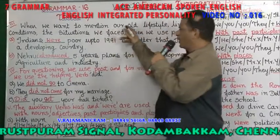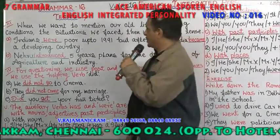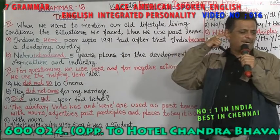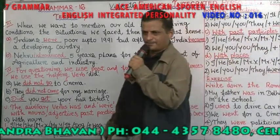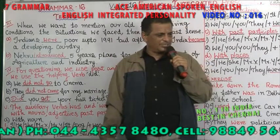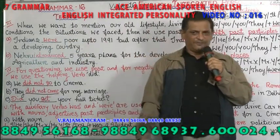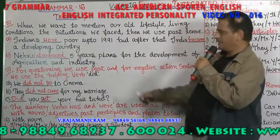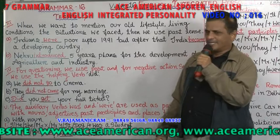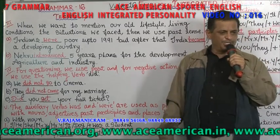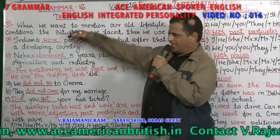The third place is when you want to mention your old lifestyle — old lifestyle conditions and situations we faced in the past. We faced a lot of difficulties in the past. For example, now Indians are rich because many have gone to the USA, but Indians were poor in the past. The past condition up to 1991 — only after 1991 did India get the telecommunication revolution, computers, and software. Only after 1991 did India become so powerful. Before that, Indians were poor.